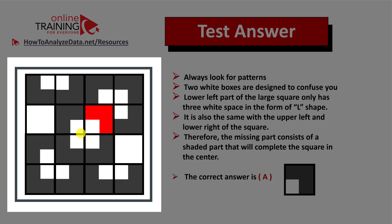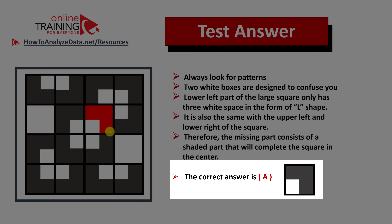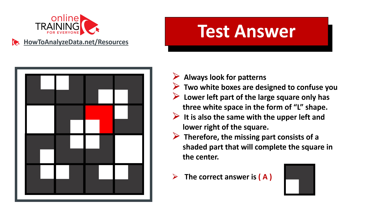Two white boxes are designed to confuse you. The lower left part of the larger square only has three white spaces in the form of an L-shape, and a similar symmetrical pattern follows in the upper right corner. This is why the missing part consists of the shaded part which completes the square in the center. The correct answer is Choice A. Hopefully you've nailed this question and now know how to answer similar problems in the test.